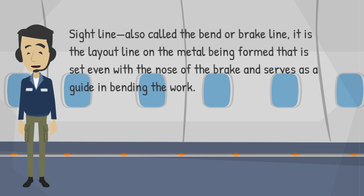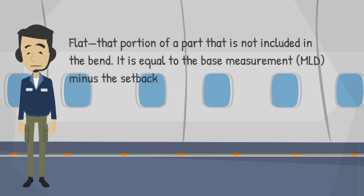Sight line: also called the bend or break line. It is the layout line on the metal being formed that is set even with the nose of the break and serves as a guide in bending the work. Flat: that portion of a part that is not included in the bend. It is equal to the base measurement (MLD) minus the setback.